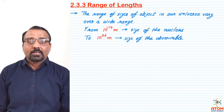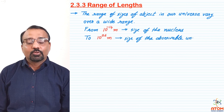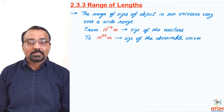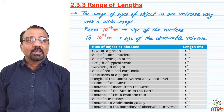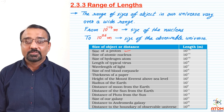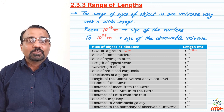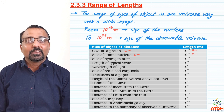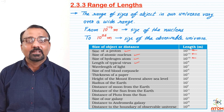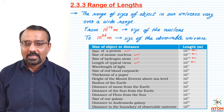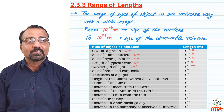Let us see a table by which we will come to know different sizes, starting from minus values to plus values. The size of a proton is of the range of 10 raise to minus 15 meter. The size of an atomic nucleus is 10 raise to minus 14 meter. The size of hydrogen is 10 raise to minus 10 meter, and the length of a virus is approximately 10 raise to minus 8 meter.